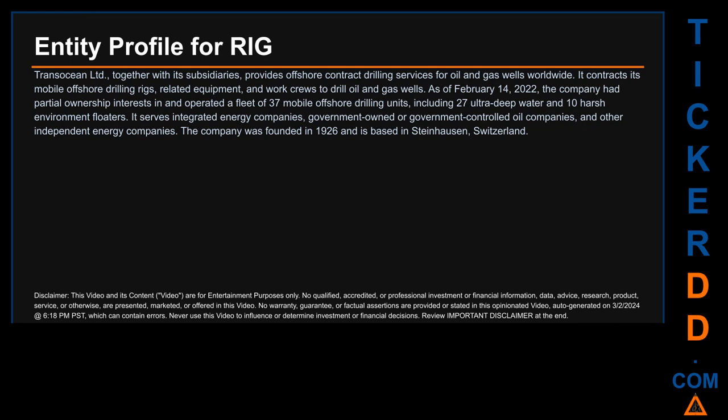Hello, my name is Carl. I searched the public web to find information about the company behind this ticker. Transocean Limited, together with its subsidiaries, provides offshore contract drilling services for oil and gas wells worldwide. It contracts its mobile offshore drilling rigs, related equipment, and work crews to drill oil and gas wells. As of February 14, 2022, the company had partial ownership interests in and operated a fleet of 37 mobile offshore drilling units, including 27 ultra-deepwater and 10 harsh environment floaters. It serves integrated energy companies, government-owned or government-controlled oil companies, and independent energy companies. The company was founded in 1926 and is based in Steinhausen, Switzerland.